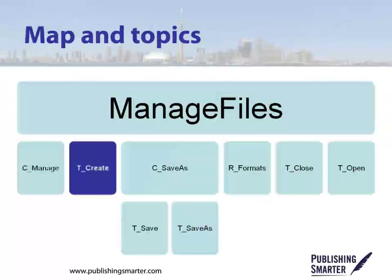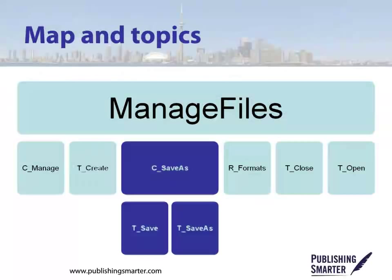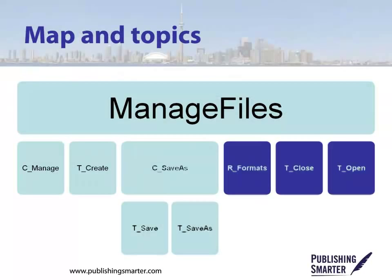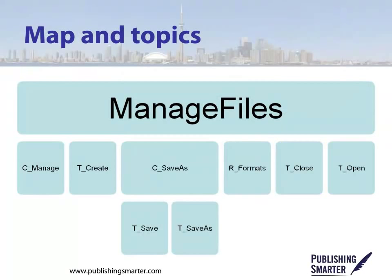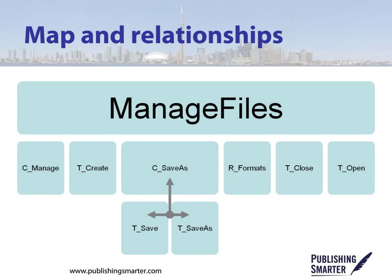In essence, we have topics and relationships between them. Each topic is still a standalone unit of information. This map addresses how to manage files, with topics based on the brainstorming. These are assigned topic types and put into a hierarchy for use within the map. There's a concept explaining what we mean by managing files — the file name has C underscore and the name of the topic. The map also contains a task on how to create a new file, and two tasks detailing how to save a file or how to use save as.